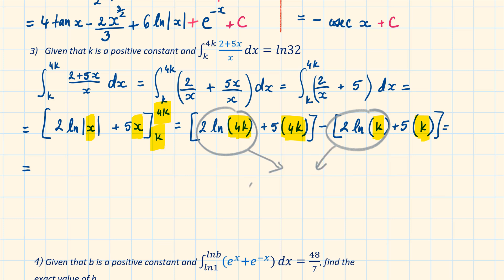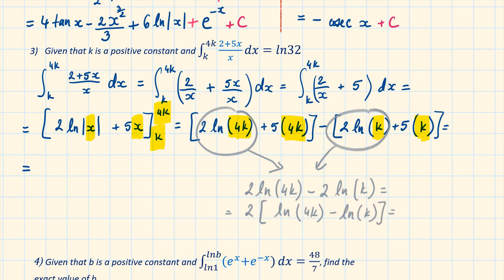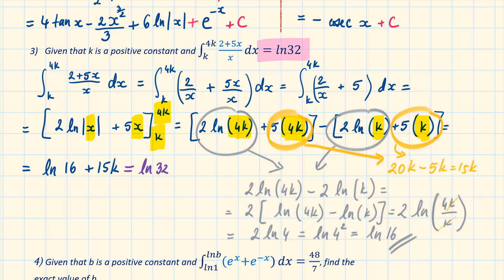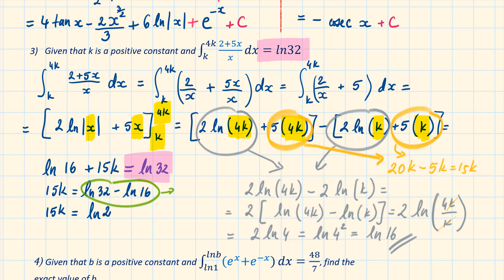Simplifying the logarithms: 2 ln 4k minus 2 ln k. Factorising out the 2 and applying log rules, minus becomes division, giving 2 ln(4k divided by k). The k's cancel, and applying log rules again, 2 times becomes a power of 2, which results in ln 16. Simplifying the other terms: 20k minus 5k equals 15k. It was given that this integral equals ln 32, so making our result equal to ln 32 and solving the equation, using log rules minus is division giving ln 2. Dividing both sides by 15, k is equal to 1 over 15 times ln 2.